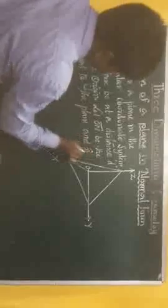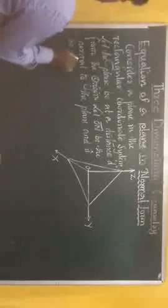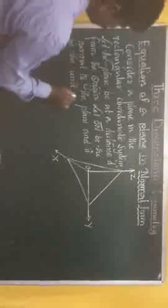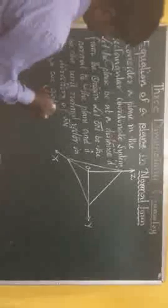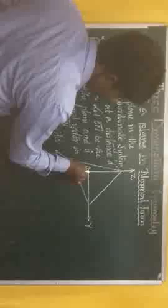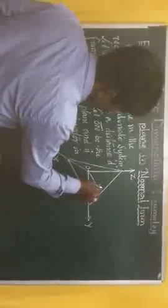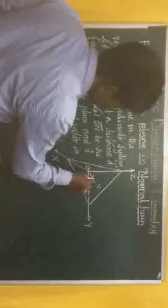Let vector ON be the normal to the plane, and n-cap be the unit normal vector in the direction of vector ON. We get vector ON is equal to n-cap times d, because the length of ON is d and n-cap is the unit vector along that direction.